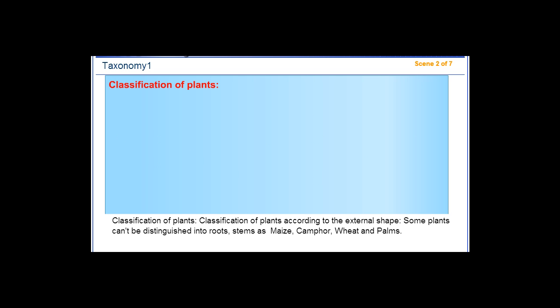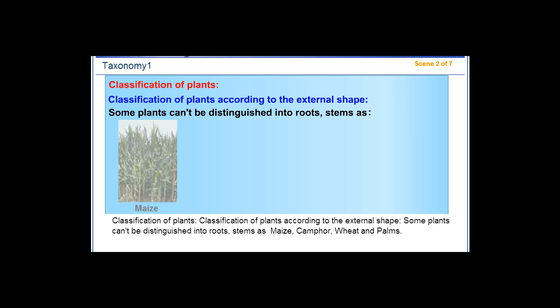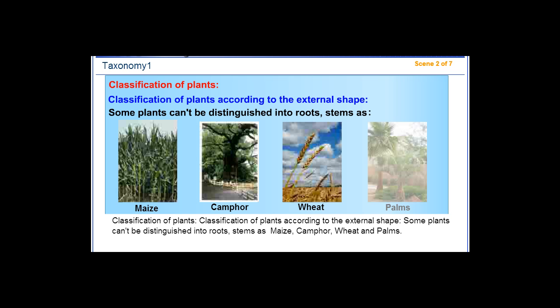Classification of plants according to the external shape: Some plants can be distinguished into roots, stems — as maize, corn, wheat, and palms.